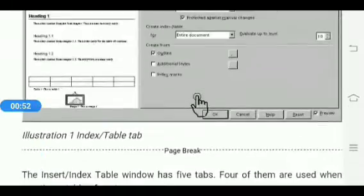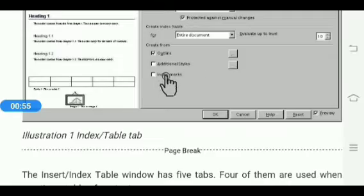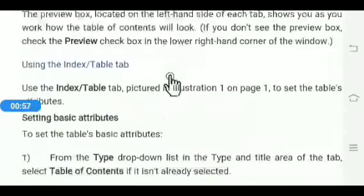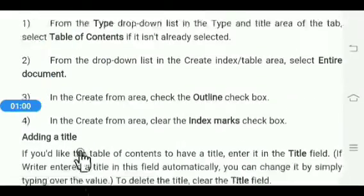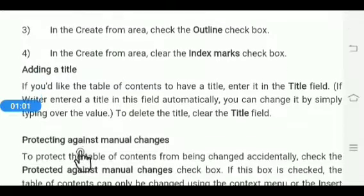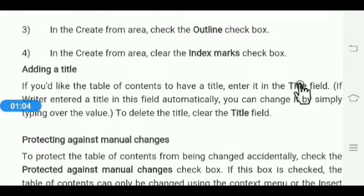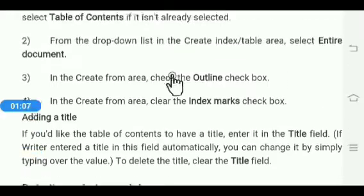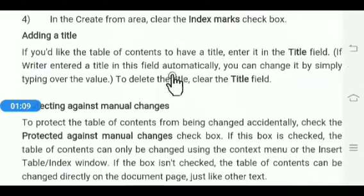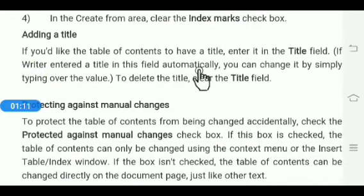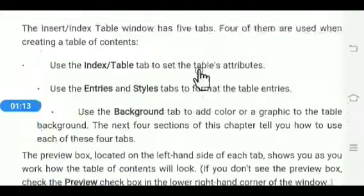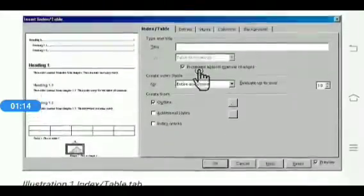As shown in illustration one, Outline is checked and Index Marks option is shown. If you want to add a title, enter it in the Title field by simply typing the characters. See here — this is the Title field.